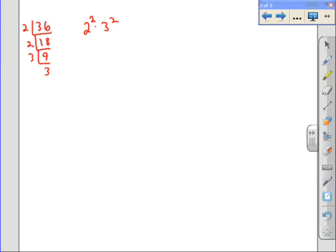So to find the total number, remember total number, add 1 to each exponent and multiply those together. 2 plus 1 is 3. 2 plus 1 is 3. The total number of factors is 9. We don't even have to list them out.